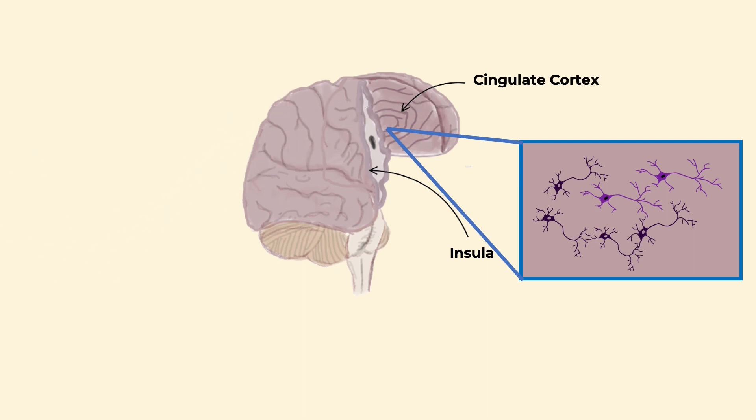We've discussed dopamine as a reward neurotransmitter before, but in this case, it is going to talk to a different neurotransmitter called GABA. GABA synchronizes cells within the cingulate cortex and insula, which causes those self-reflection areas to be activated.